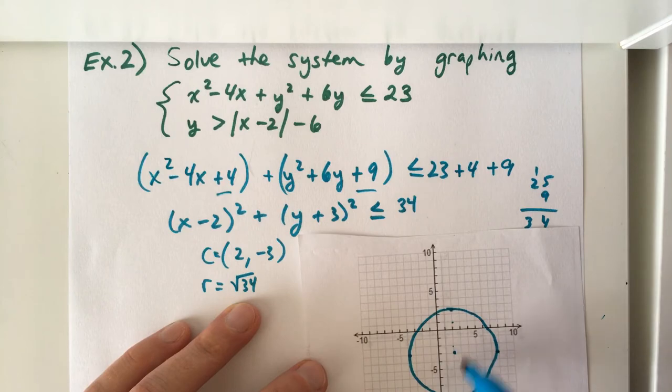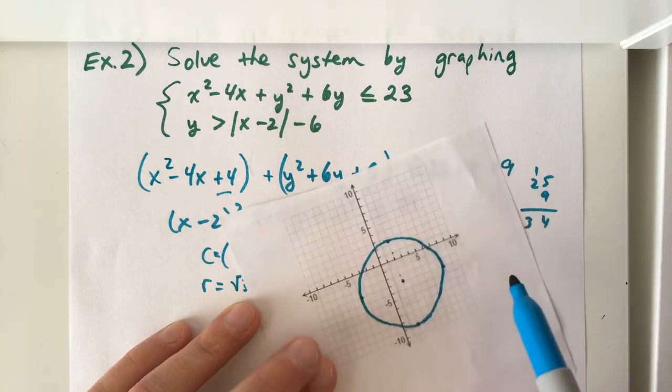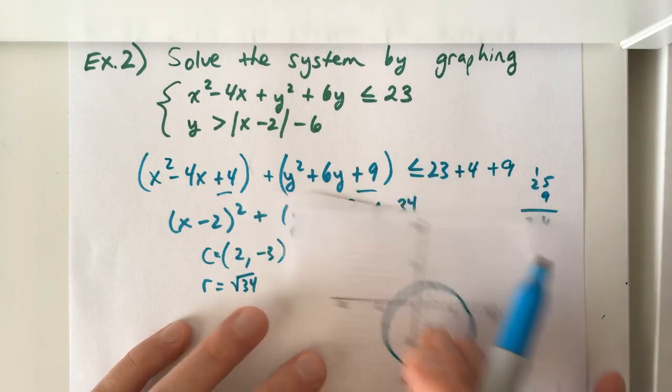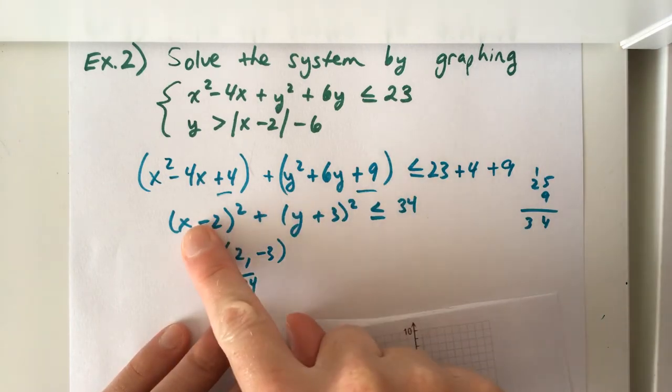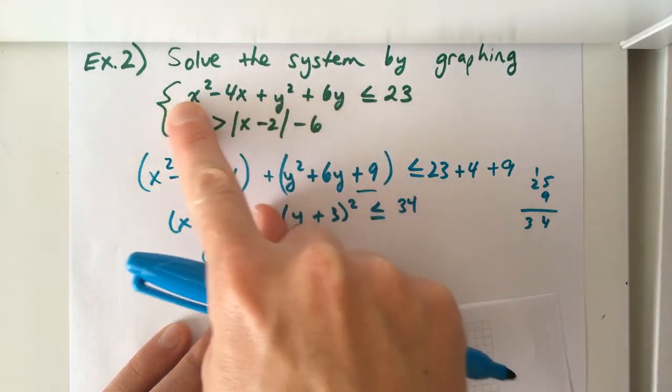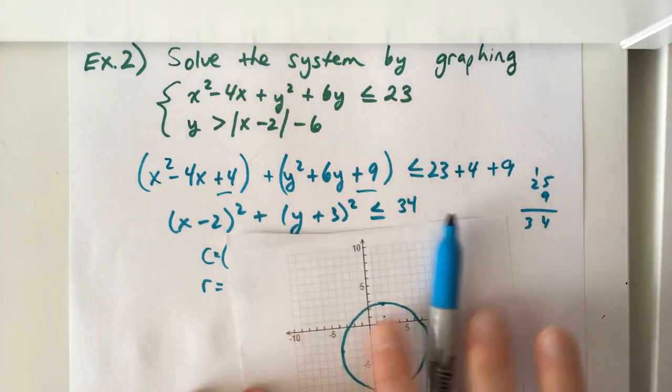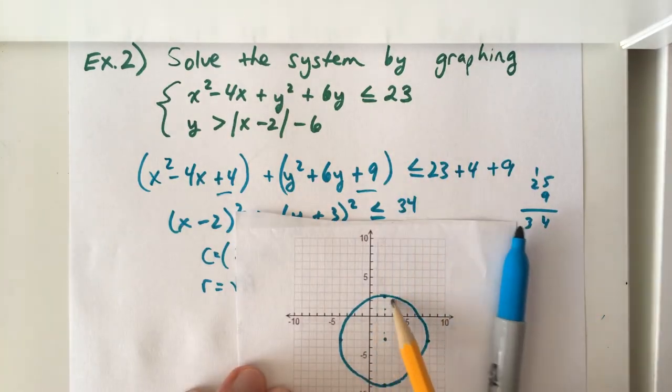You can always test a point within this region to make sure it works. And 0, 0 is within the region. If we plug in 0 for all of the x's and all of the y's, it is less than or equal to 23. So we can think about shading inside the circle.